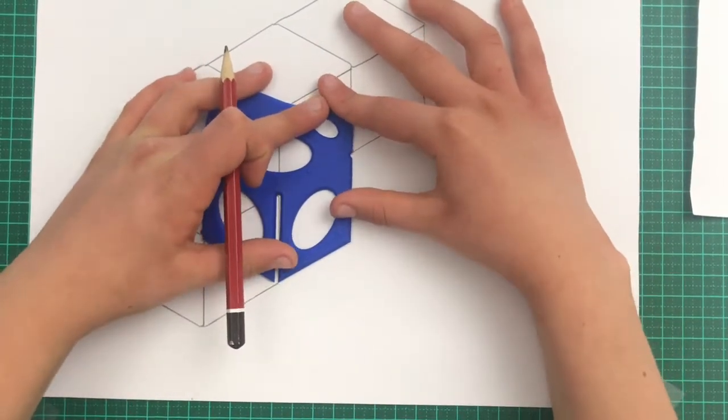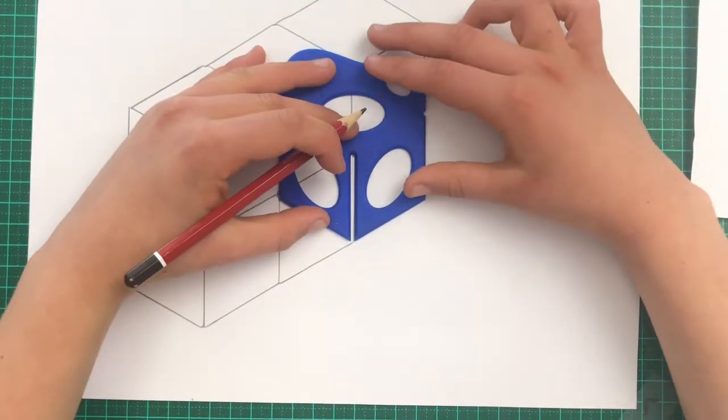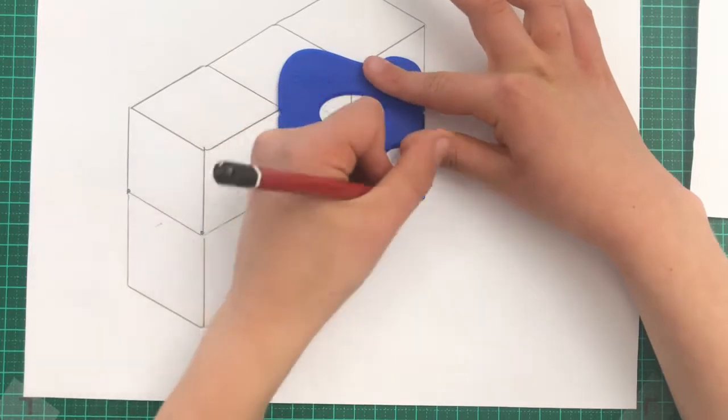Now we're going to do the same thing. Draw half a splat again. Draw half a cube. And that's the far corner you're putting in there? Yep.